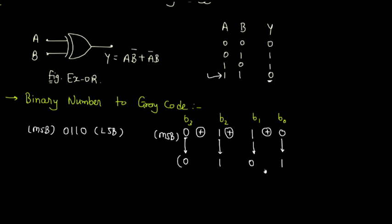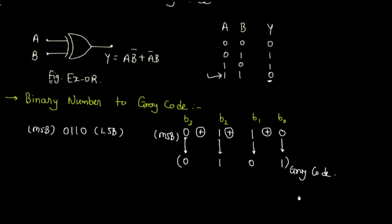This is the grey code for the given binary number. This way, we can convert any binary number into grey code.